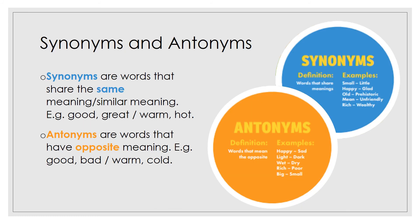Synonyms and antonyms. Synonyms are words that share the same or similar meaning — for example, good or great, warm or hot. Antonyms are words that have opposite meanings — for example, good and bad, warm and cold. There is an infographic here reinforcing that.